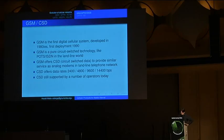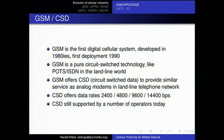Let's start with a slightly historical excursion. CSD — circuit-switched data — was the first technology in digital cellular telephony systems to transmit data between terminals, not voice. GSM is, to the best of my knowledge, the first digital cellular system, developed in the 1980s and first deployed around 1990. It's a pure circuit-switched technology, so it doesn't really have data capabilities except CSD.